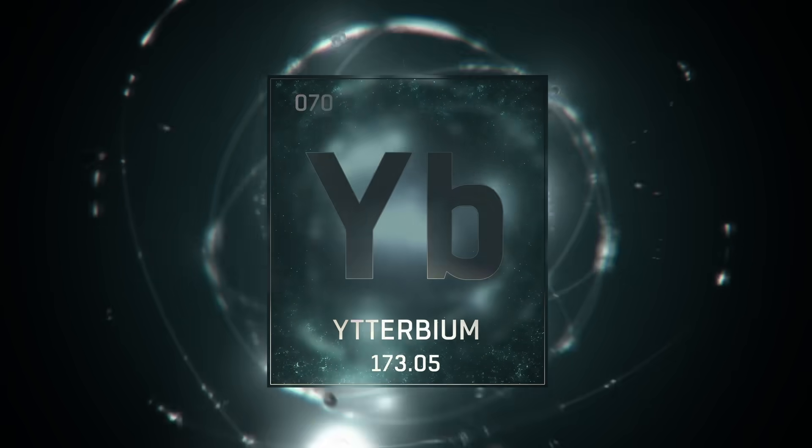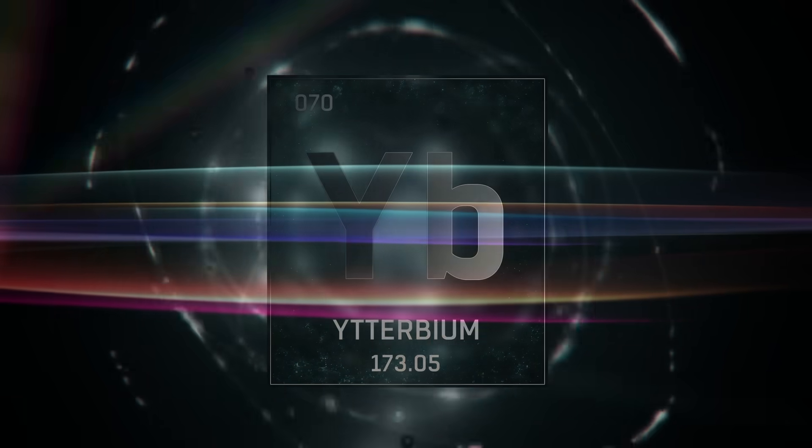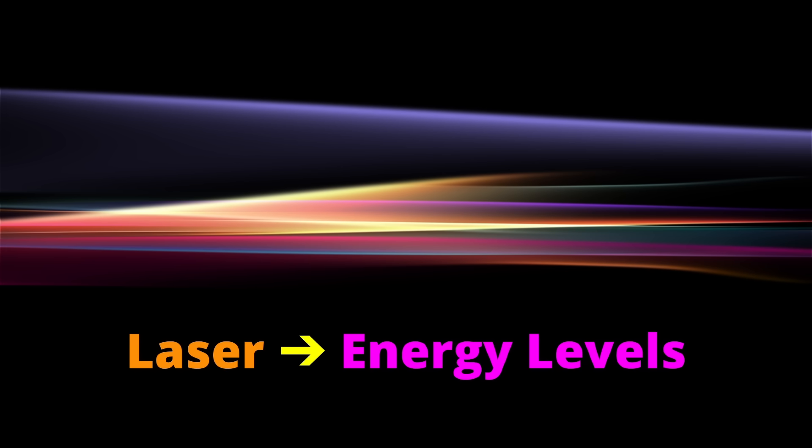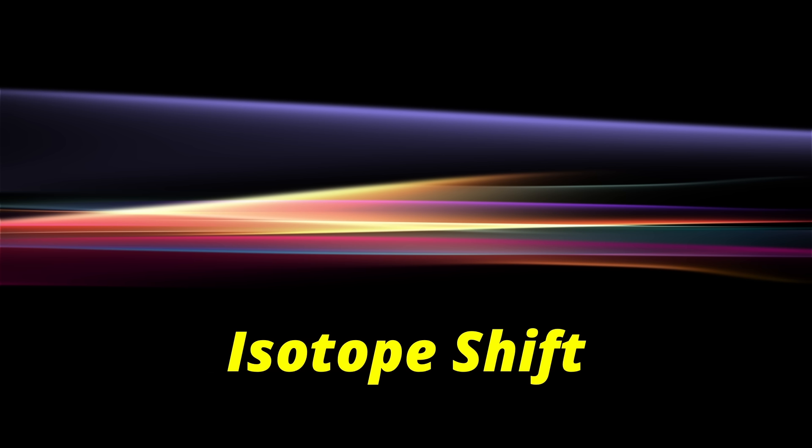Ytterbium just so happens to have the perfect number of neutrons and protons in the nucleus to make its electron energy levels very sensitive to changes in the neutron count. This means that if you compare different isotopes of Ytterbium with each other, you learn a lot about the nuclear structure. This is why physicists like to hit different isotopes of Ytterbium with laser light at different frequencies and then check what comes back. Then they compare the responses of different isotopes, which is called the isotope shift.